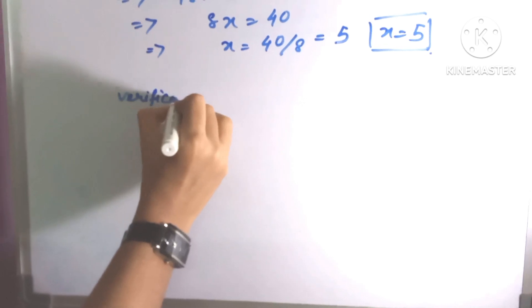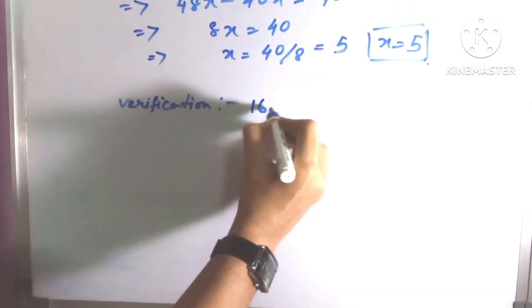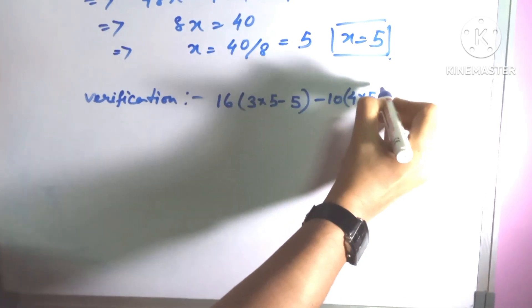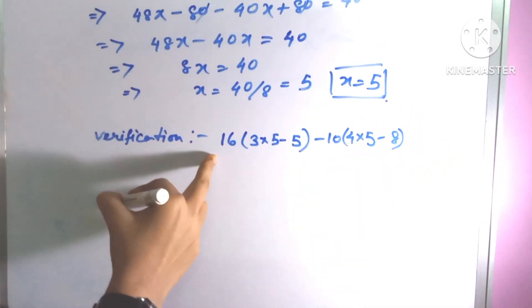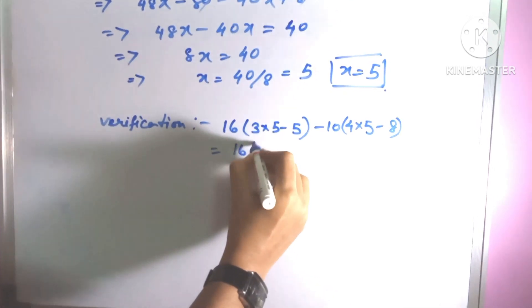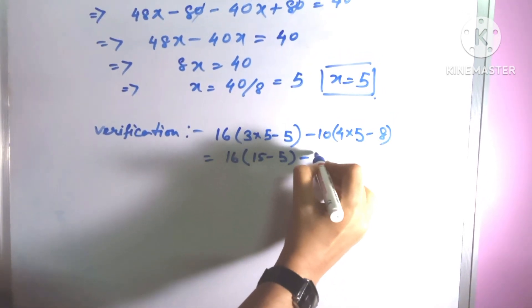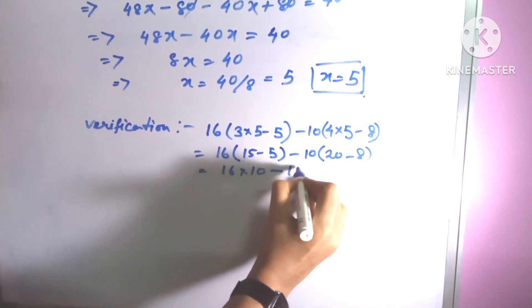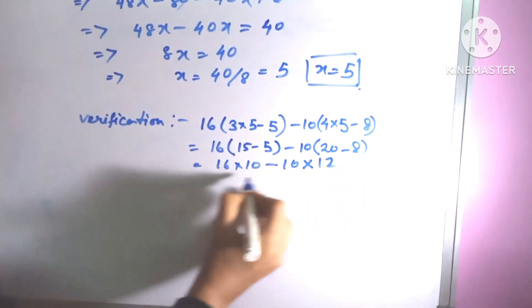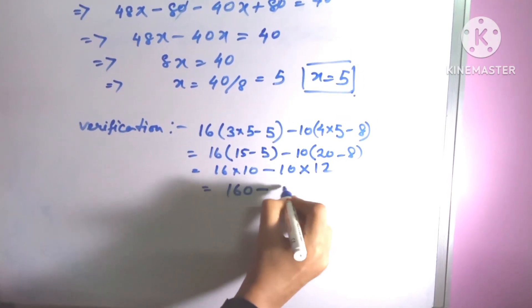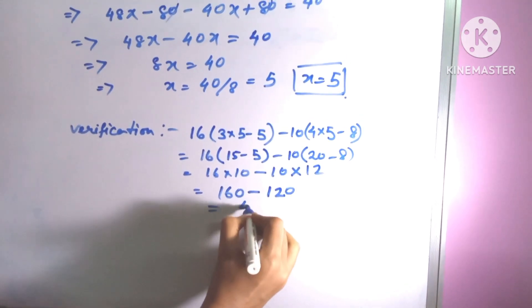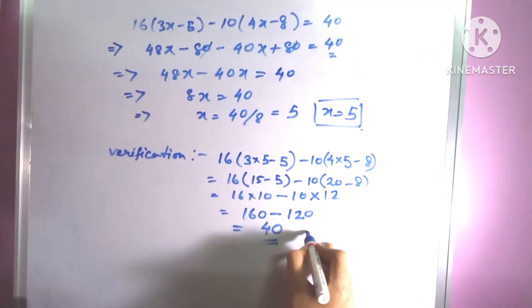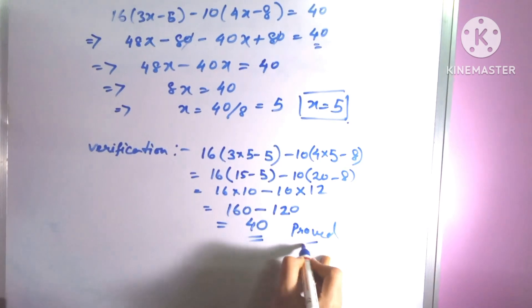Now there is an option of verification here. Means the value of X equals 5, is this correct answer or not? We can verify by putting the value of X equals 5 in the left side. Now you can see the value of X equals 5 putting at the left hand side of the equation, this will be the value we got, exactly equal to the value of right hand side of the equation. So it is proved that the equation is correct.